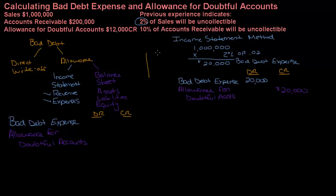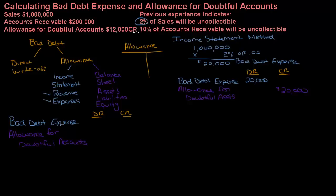T-accounts are really helpful when you're dealing with bad debt expense and allowance for doubtful accounts. According to my problem, I have a twelve thousand dollar credit balance to start with in the allowance account. I just credited the account another twenty thousand, so my balance is thirty-two thousand. If we're not careful, this balance could just keep going up. As managers, we have to be really careful to monitor that percentage and not just keep using the same percentage if the allowance balance keeps going up. That's the income statement method.